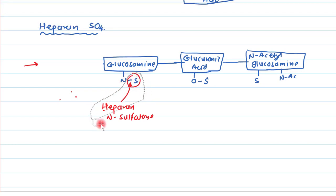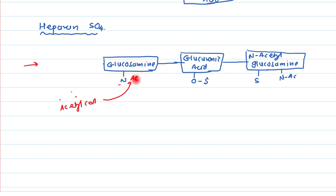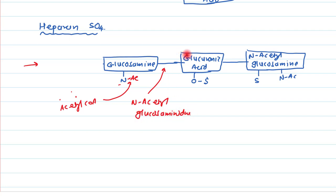Once the sulfate is removed from D-glucosamine, the acetyl-CoA:glucosamine acetyltransferase transfers an acetyl group to the nitrogen, converting it to N-acetylglucosamine. Then N-acetylglucosaminidase breaks the bond to release it, exposing the next sugar — D-glucuronic acid.